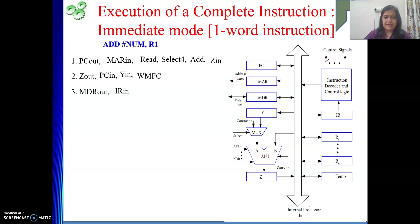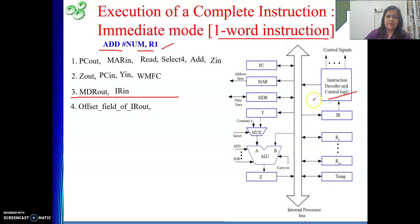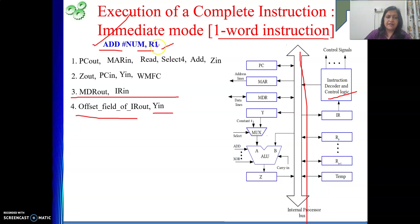By the end of clock cycle 3, the instruction is in IR and being decoded. We know we need to perform an add operation; our data is part of the instruction, and the other operand is in R1. Since my instruction is one word, after that one memory operation the instruction is completely in IR. Then we take the offset field of IR out — whatever is in the address/offset field — place it on the bus, and give it to Y register, because we are going to perform an add operation.